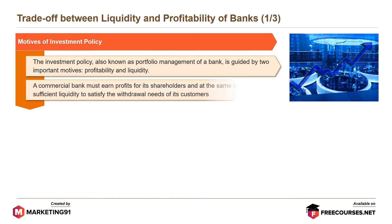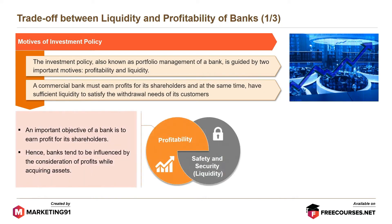A commercial bank must earn profits for its shareholders and at the same time have sufficient liquidity to satisfy the withdrawal needs of its customers. Profitability is an important objective of a bank — to earn profit for its shareholders. Hence, banks tend to be influenced by the consideration of profits while acquiring assets.